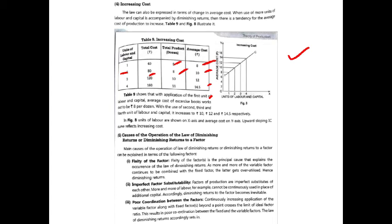Next is poor coordination between the factors. When continuously increasing variable factors alongside a fixed factor, once the ideal factor ratio is exceeded and the limit is exhausted, applying more labor beyond that point causes production to start decreasing.